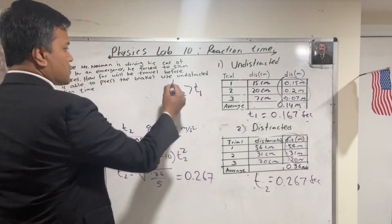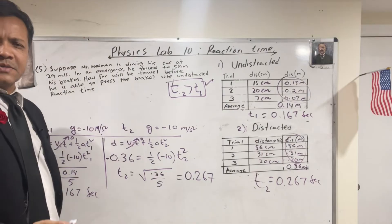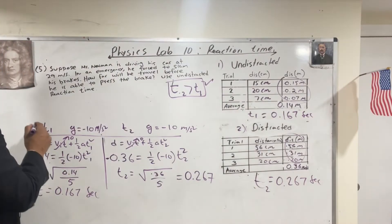Alright. So our hypothesis is correct. T2 is bigger than T1, of course. Why is that? Because the person was distracted.